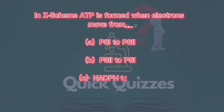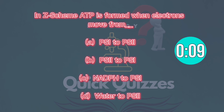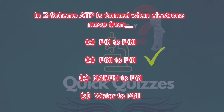In Z-scheme, ATP is formed when electrons move: A) PS1 to PS2, B) PS2 to PS1, C) NADPH to PS1, D) water to PS2. Correct answer: B, PS2 to PS1.